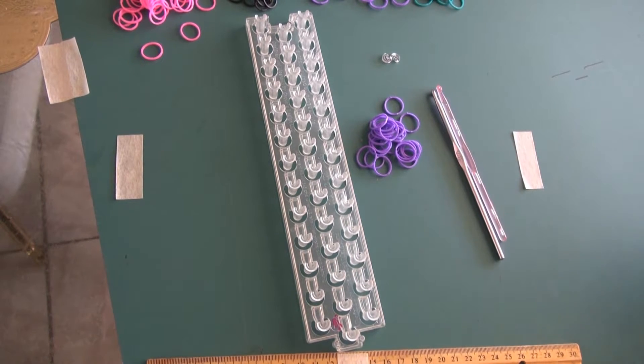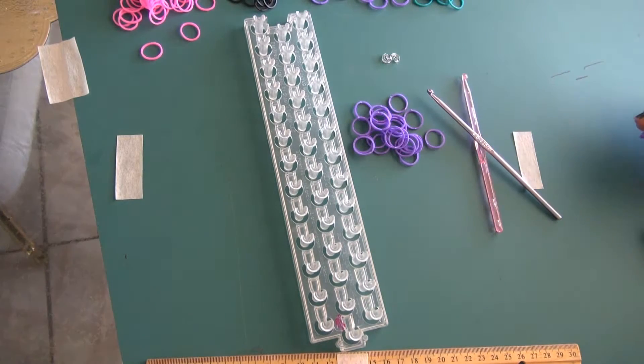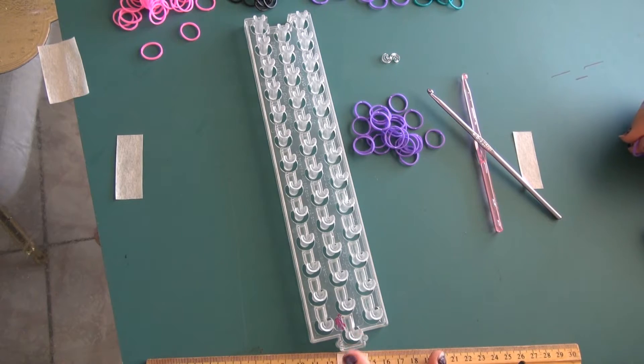Okay, let's get started. First off, you want to make sure your red arrow is facing away from you, or the opening of the pegs is facing away.